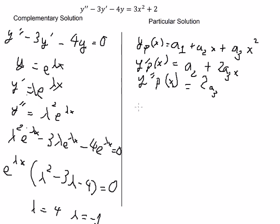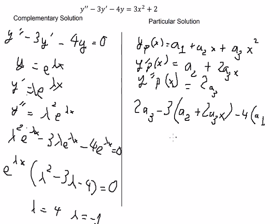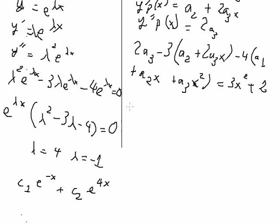We substitute everything into the equation. We get two A3, minus three times (A2 plus two A3 s), minus four times (A1 plus A2 s plus A3 s squared), equal to three s squared plus two. We then arrange terms by the power of s: the s-squared terms, the s terms, and the constant terms.